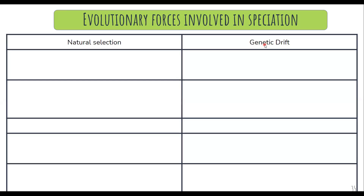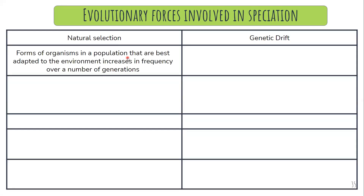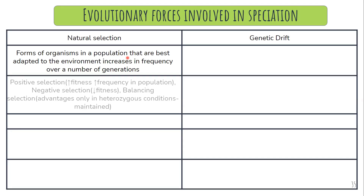We all know about natural selection — there are different alleles, and the one that is advantageous or gives the recipient an advantage or increases its reproductive fitness is selected and passed down to each generation. Forms of organisms in a population that are adapted best to an environment increase in number over many generations.